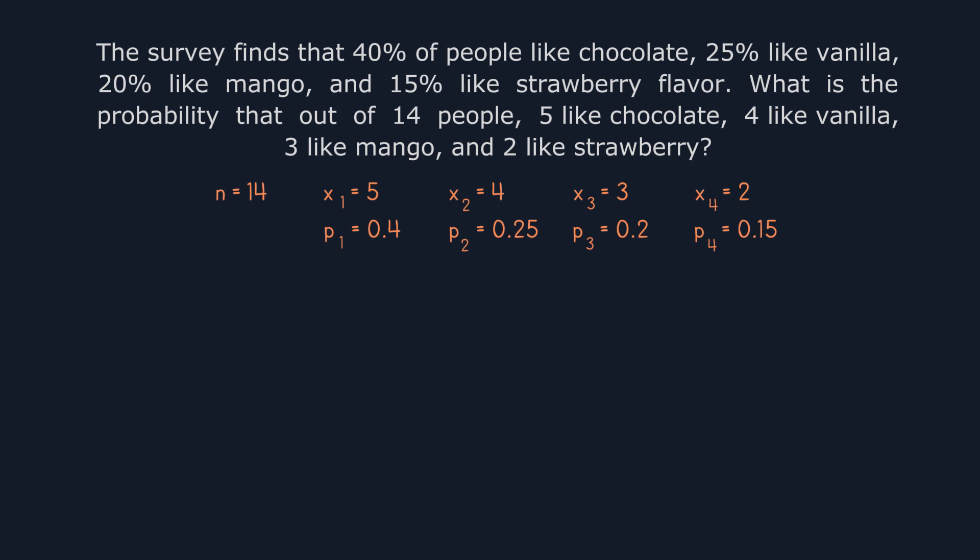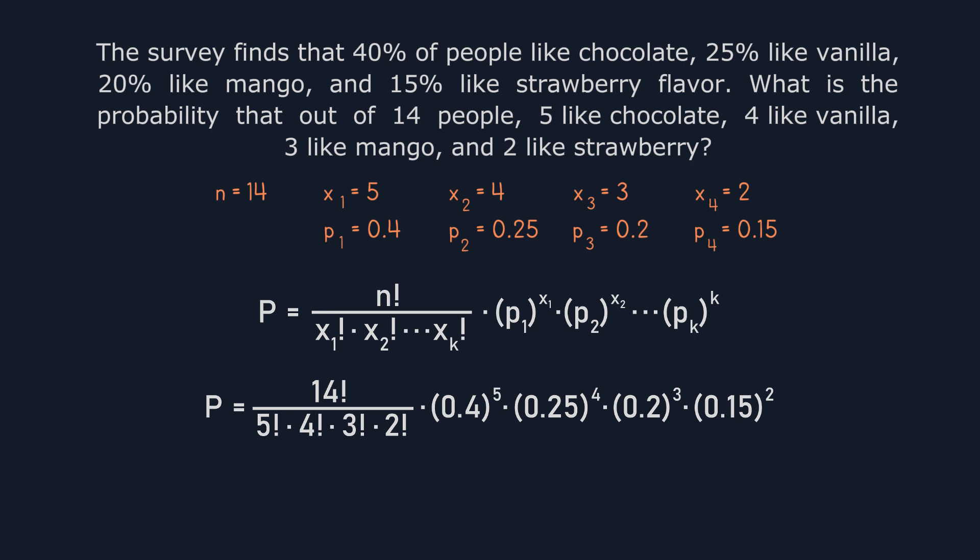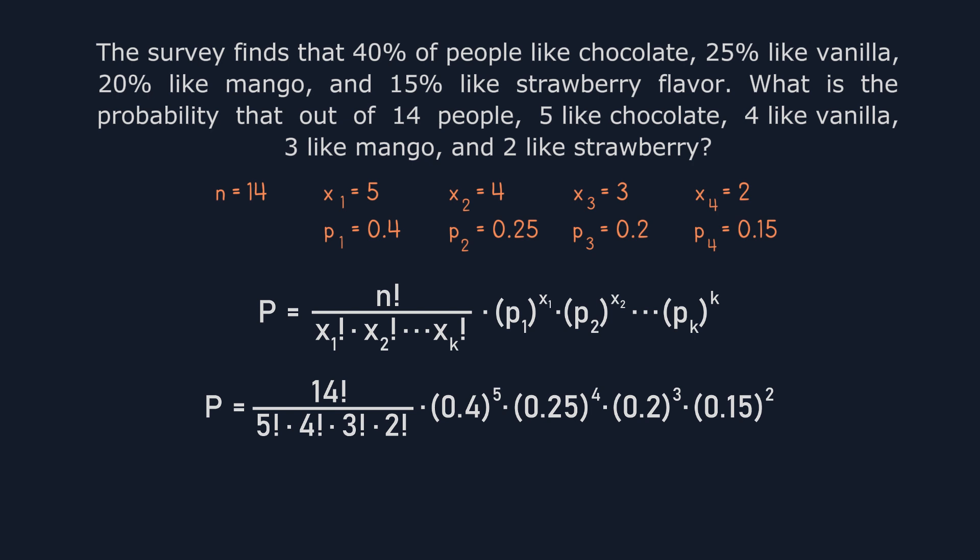We'll now substitute these values into the multinomial formula. The equation becomes 14 factorial divided by 5 factorial times 4 factorial times 3 factorial times 2 factorial, multiplied by 0.4 raised to the power of 5, multiplied by 0.25 raised to the power of 4, multiplied by 0.2 raised to the power of 3, and multiplied by 0.15 raised to the power of 2.